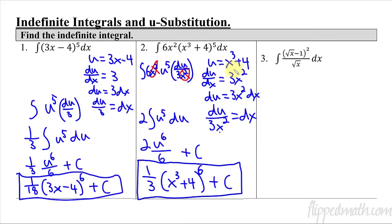Here's a hint for knowing if you're doing it right: when you choose your u, think ahead about what its derivative is. If the derivative's variable part already appears in the integrand, it will cancel — that's why x cubed plus 4 was a great choice here. I'll reinforce this idea on every remaining example.